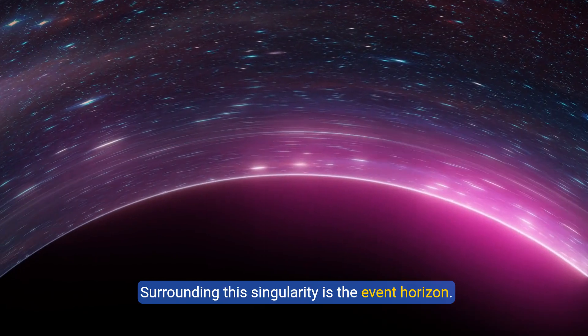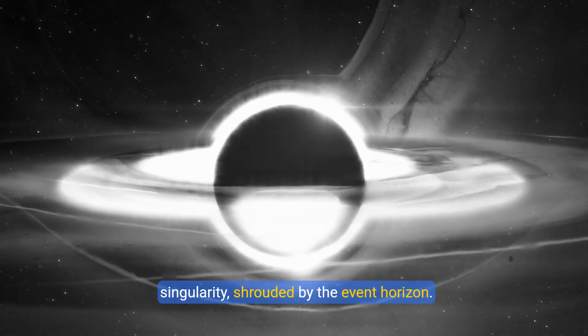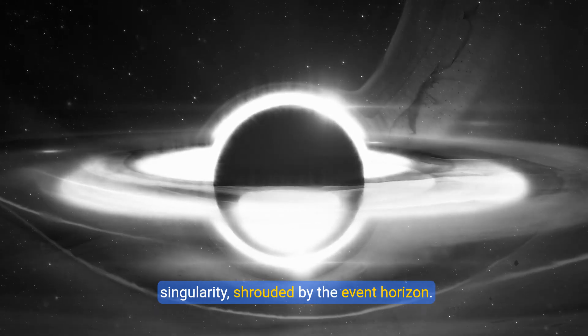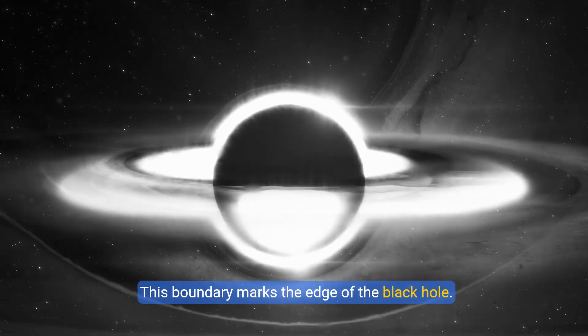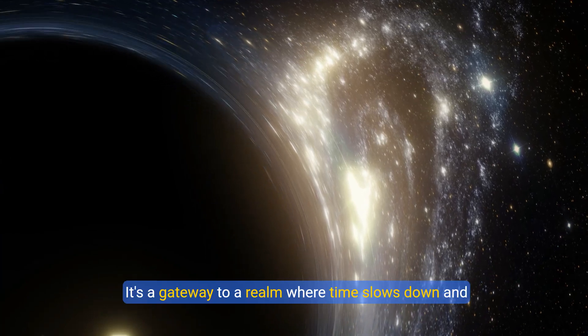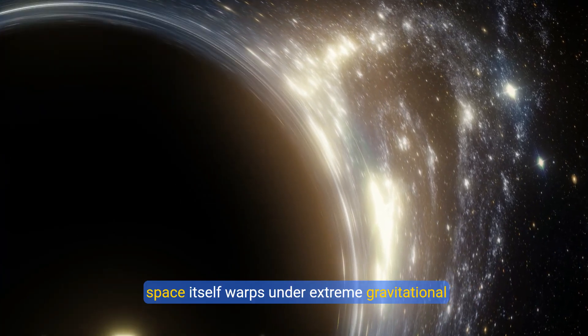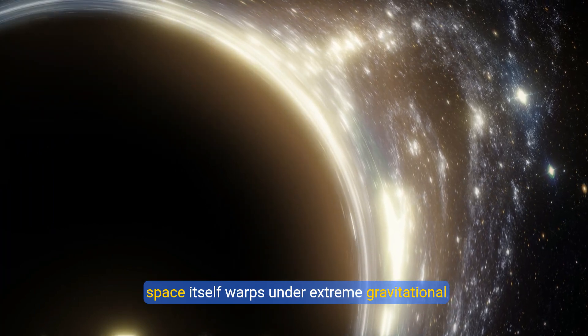Surrounding this singularity is the event horizon. At the heart of every black hole lies the singularity, shrouded by the event horizon. This boundary marks the edge of the black hole, where gravity's pull becomes irresistible. It's a gateway to a realm where time slows down and space itself warps under extreme gravitational forces.